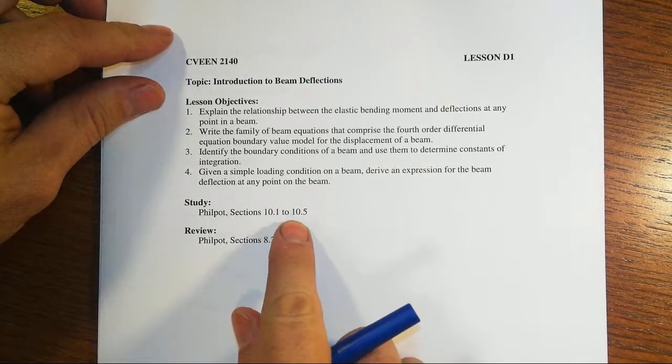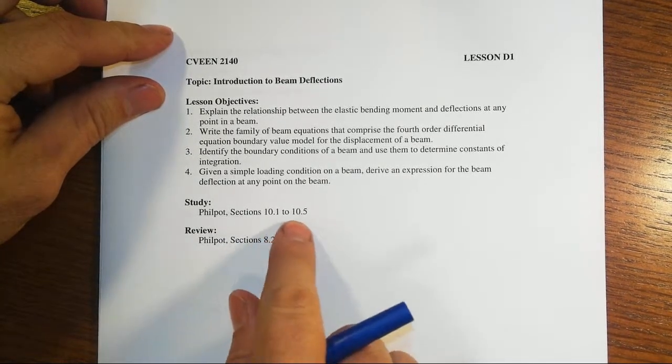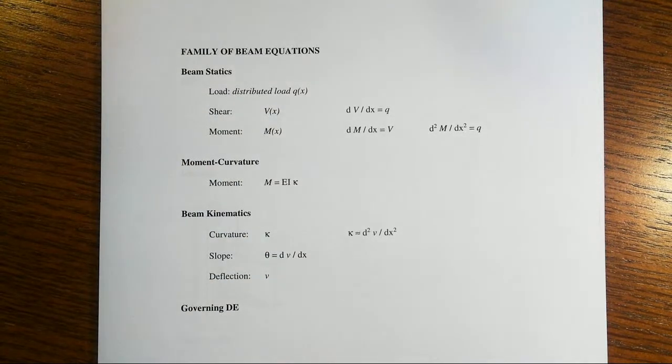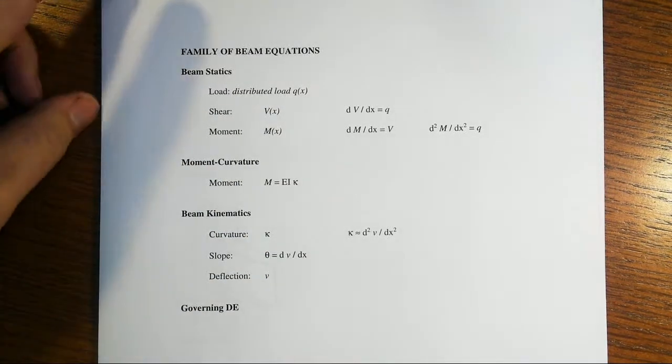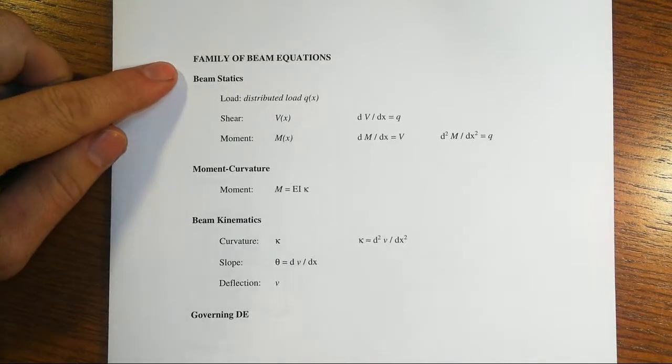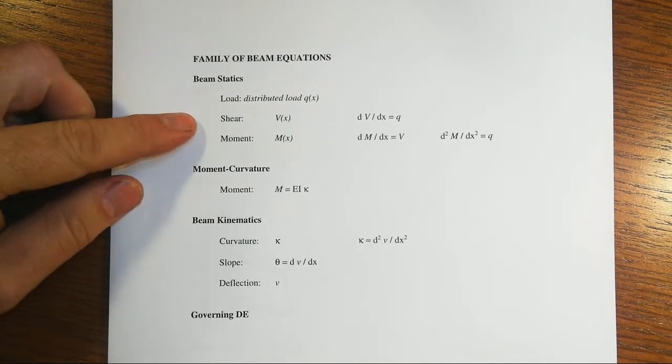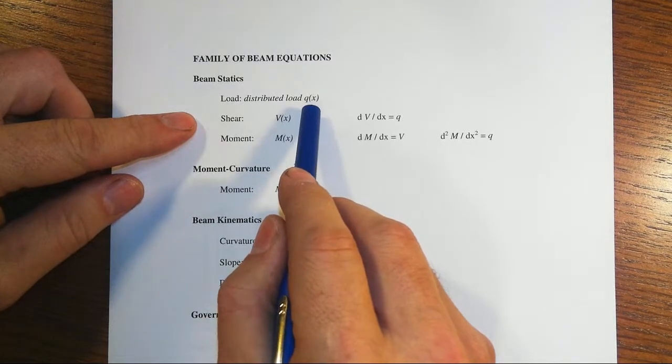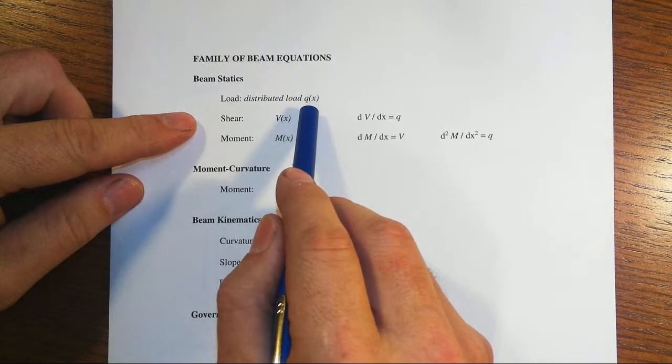So we're here in chapter 10 of Philpott, or a related chapter if you are in a different textbook, but the big thing here is that in statics, we develop the first part of our family of beam equations. Now, some textbooks will use the distributed load intensity symbol to be W.